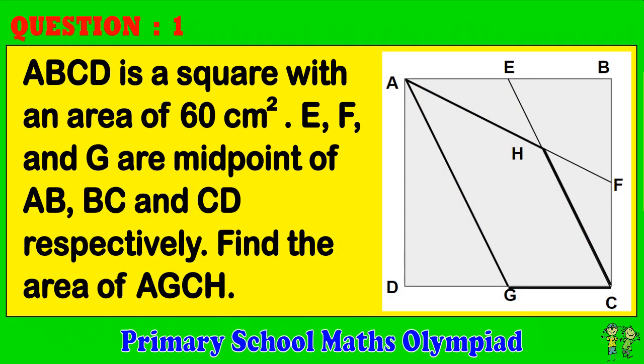Question 1. ABCD is a square with an area of 60 cm². E, F and G are midpoints of AB, BC and CD respectively. Find the area of AGCH.